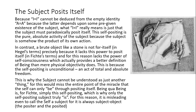In contrast, a brute object like a stone is not for itself in Hegel's terms, precisely because it lacks this power to posit itself in Fichtean terms. And for this reason, it lacks the power of self-consciousness, which actually provides a better definition of being than mere physical objectivity would — an insight which Husserl would have in 20th century phenomenology, but you already find it there in Fichte, in German idealism. This is because the self-positing is totally unconditional — it is an act of absolute freedom. Being qua being is pre-Fichtean, really just this self-positing, which is why only the self-positing self truly is. It's inherently misleading even to call this self 'subject,' for it's always subject-object, or positor and posited at once.